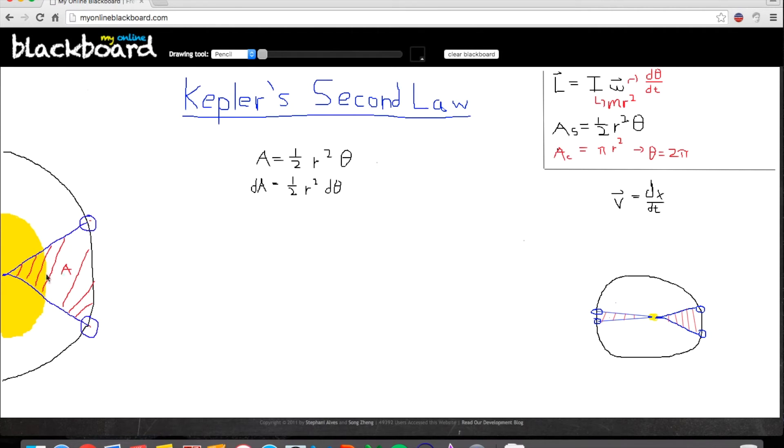So, d theta would be d theta as it approaches zero. So, you can imagine if I make this really small... Sorry if this isn't like a straight line. This d theta is getting smaller as this line approaches zero and area approaches zero. So, it's an infinitely small area correlated with an infinitely small angle.